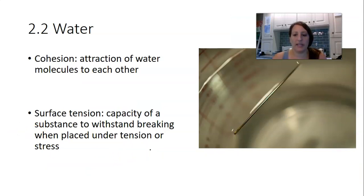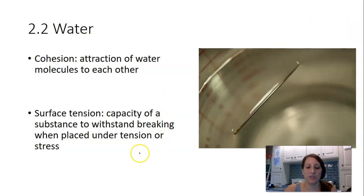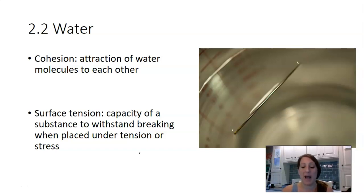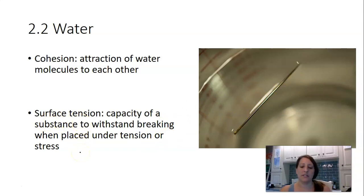Water also displays the property of being cohesive, and that creates something called surface tension. Cohesion is the attraction of water molecules to each other — we talked about water molecules being attracted to each other and forming hydrogen bonds between water molecules. In liquid water, the surface displays something called surface tension, which is the capacity of water to withstand breaking when placed under tension or stress.